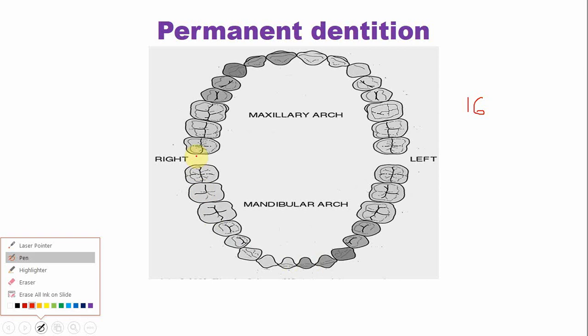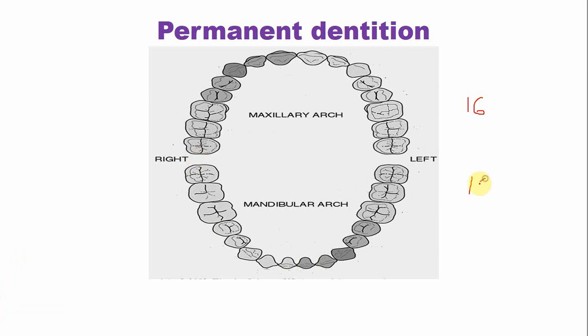In the lower arch there are 8 on each side, so 16 in the lower arch, and the total number of permanent teeth are 32. If you already know this, very good. But if you don't know, don't worry — I am here to explain all these basics for you.